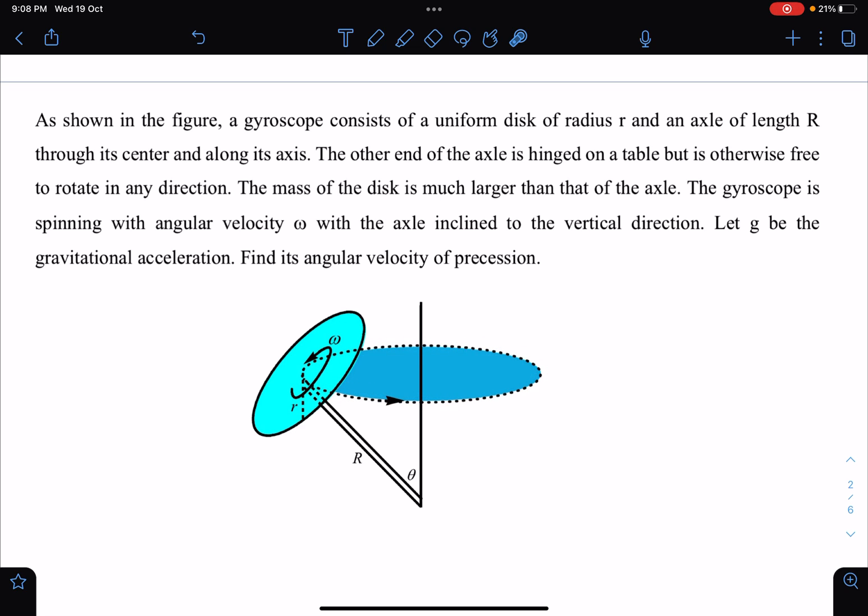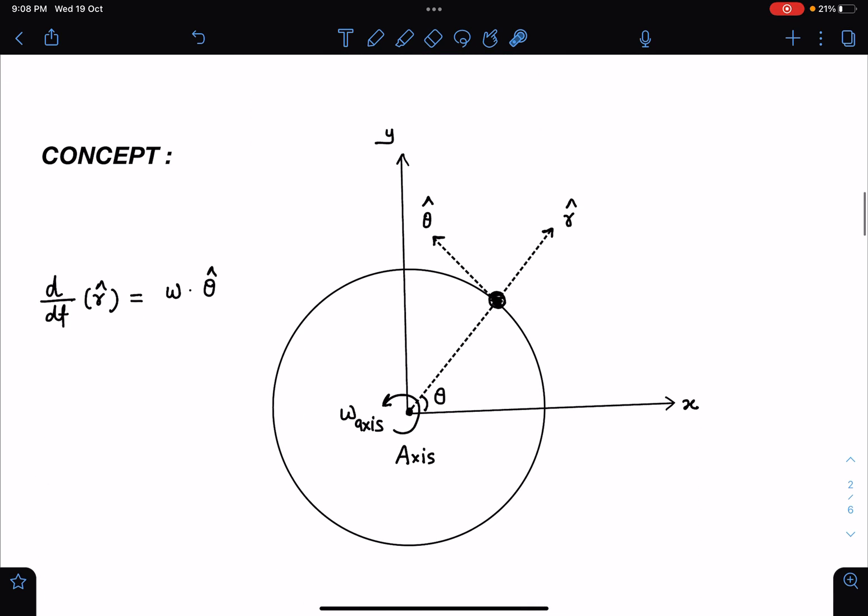There are two more videos on 3D rotation, so I request everyone to check the rotational mechanics playlist. There you will find two problems related to 3D rotation based on previous years JEE problems. In order to solve this question with ease, I will use polar coordinates. These are standard r cap and theta cap vectors which we know are changing with time.